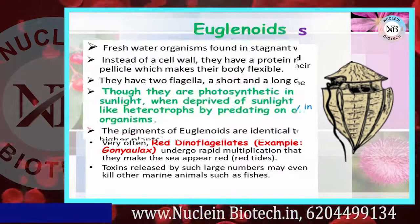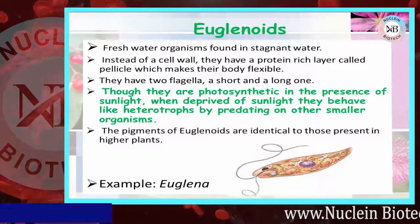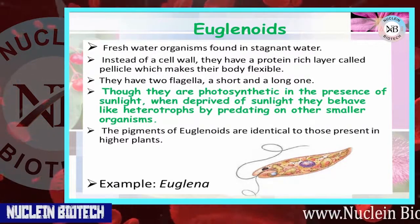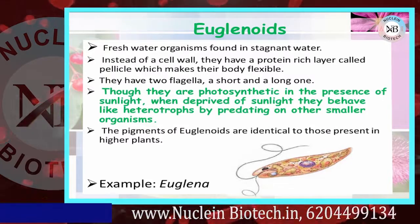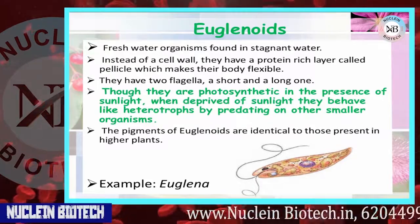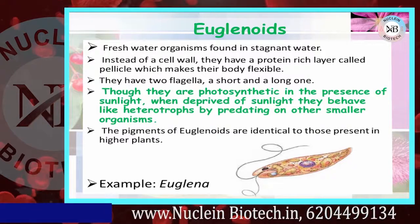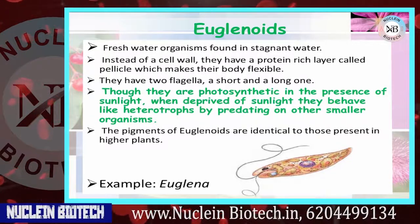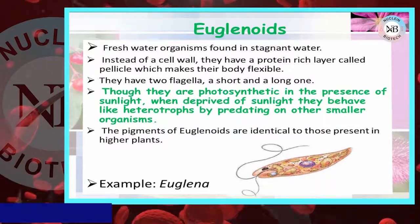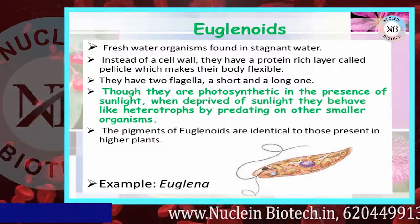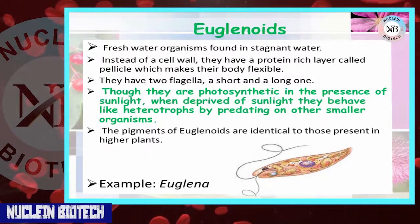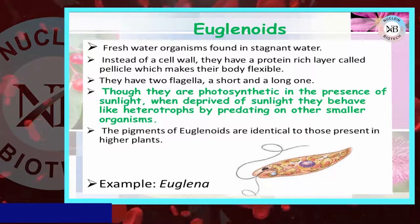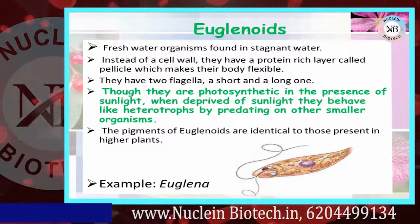Euglenoids are fresh water organisms found in stagnant water. Instead of a cell wall, they have a protein-rich layer called the pellicle, which makes them flexible. They have two flagella — a short and a long one. They are photosynthetic in the presence of sunlight, but when deprived of sunlight, they behave like heterotrophs by predating on smaller organisms. The pigments of euglenoids are identical to those in higher plants. Example: Euglena.